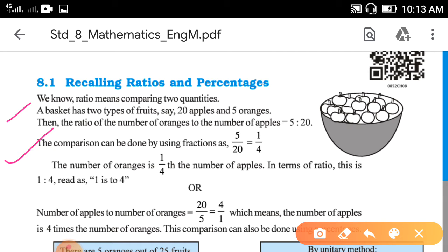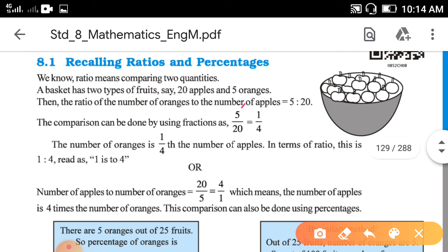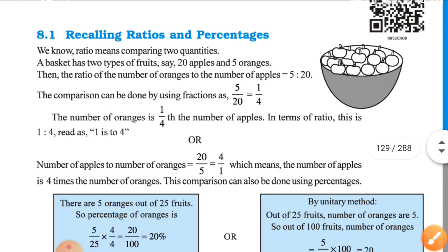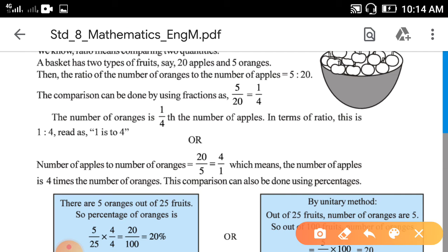You can write it as a fraction. The comparison can be done using fractions: 5 upon 20 equals 1 upon 4. Why 1 upon 4? Because 5 goes into 20 four times. So you can say that the number of oranges is 1/4th the number of apples.